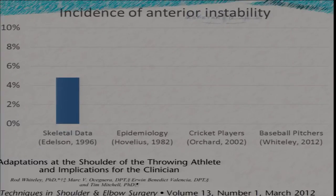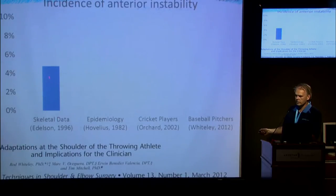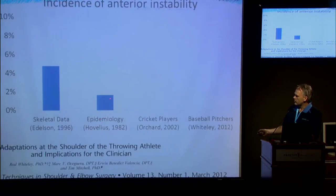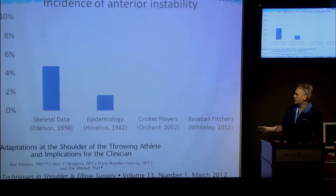In 500 skeletons, Edelson's group found bony evidence of anterior dislocation — Hill-Sachs lesions and bony Bankart lesions — in 24 of them, just under five percent. In a study of just over 2,000 people presenting to casualty wards in Sweden, Hevelius found that just below two percent were presenting because of anterior instability. Not everyone who dislocates their shoulder presents to casualty, but the incidence we can say is perhaps somewhere around one in 20.